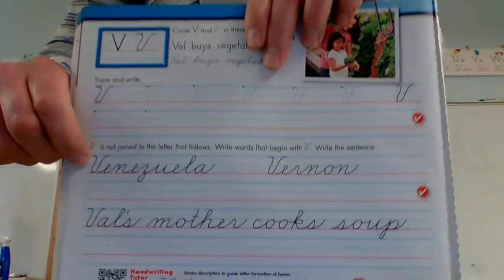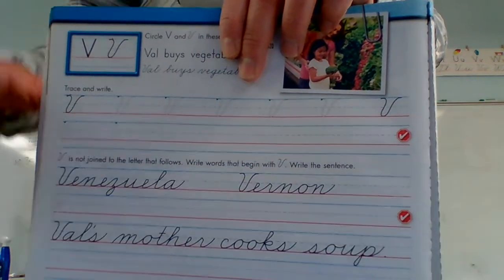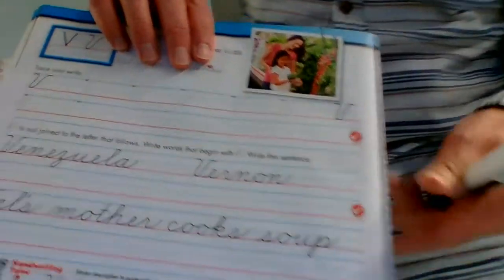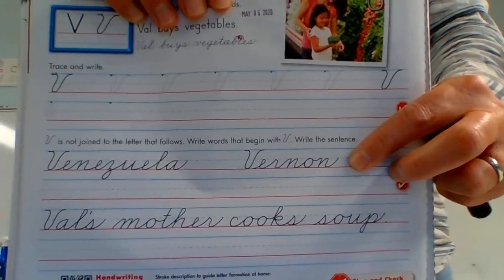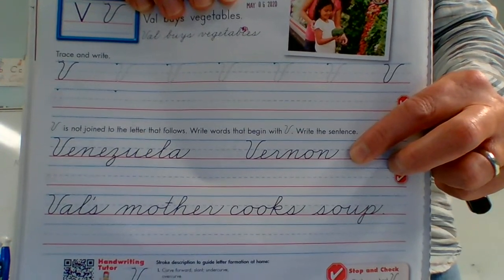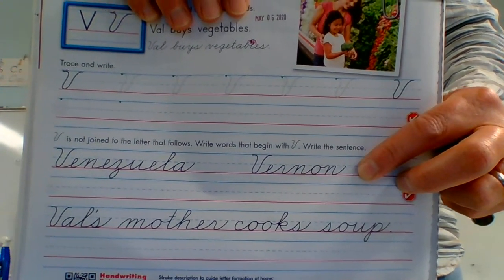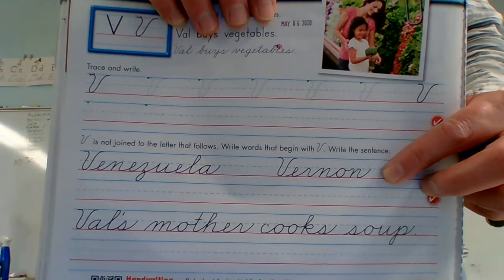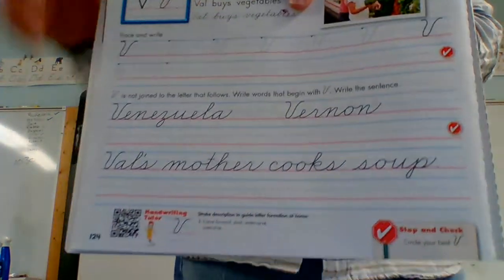Venezuela. Okay, I'll read that one to you. How about this name right here? Could you sound it out? V-E-R-N-O-N. Vernon. Vernon. And let's read this last sentence at the bottom. Somebody's name - Val. Val's. What's this one?